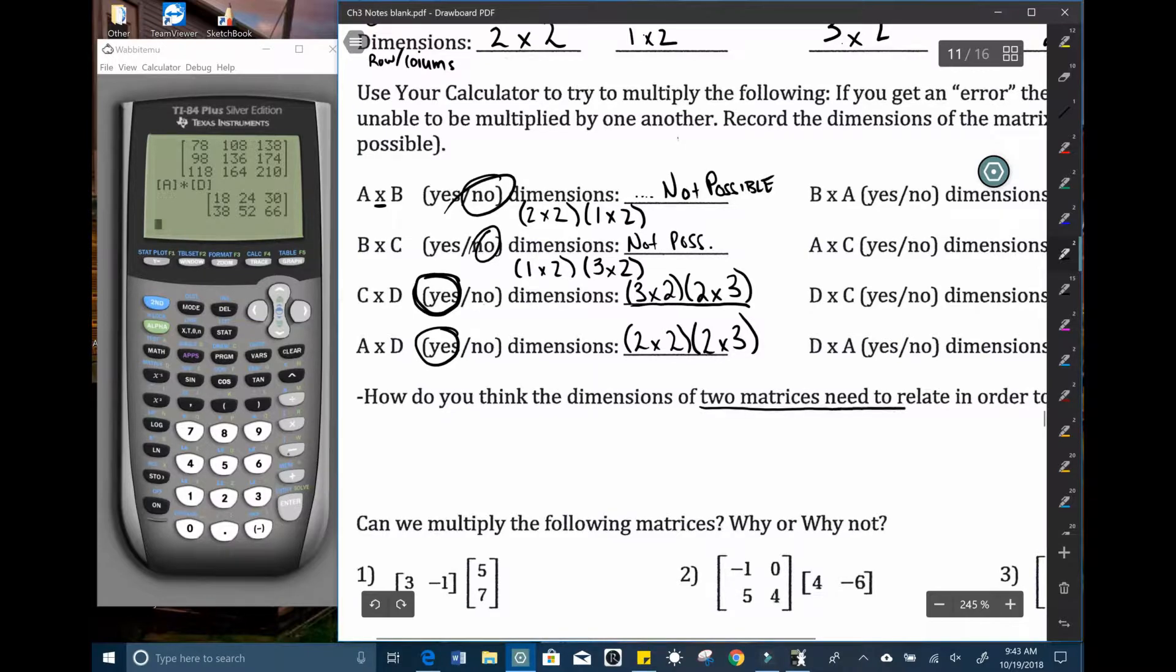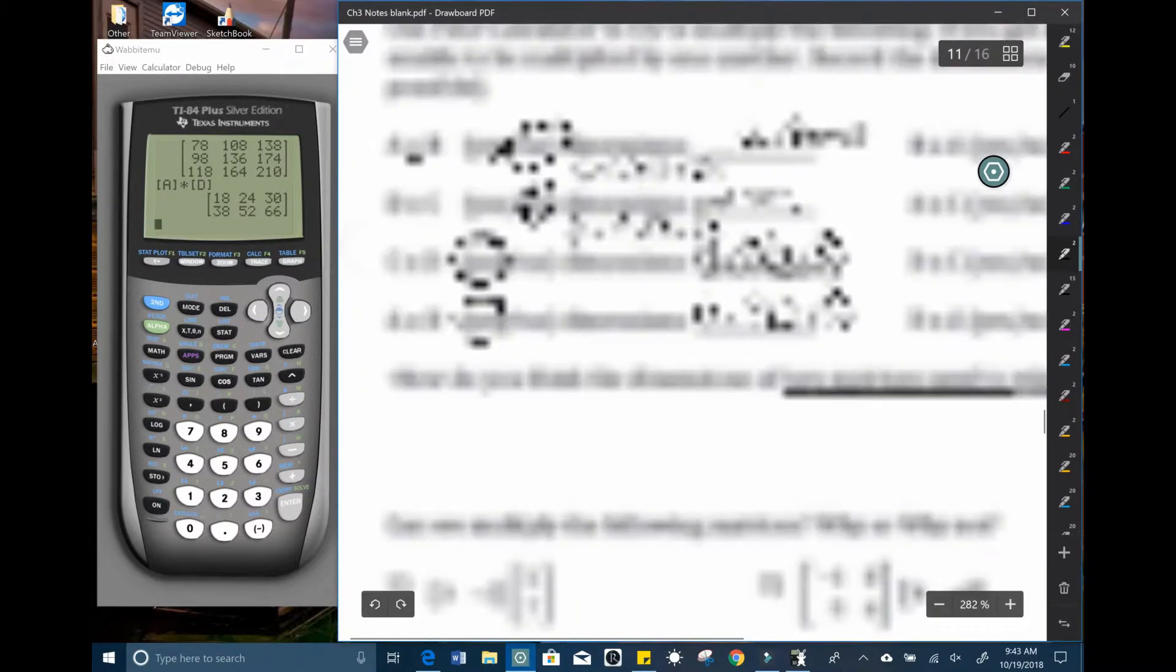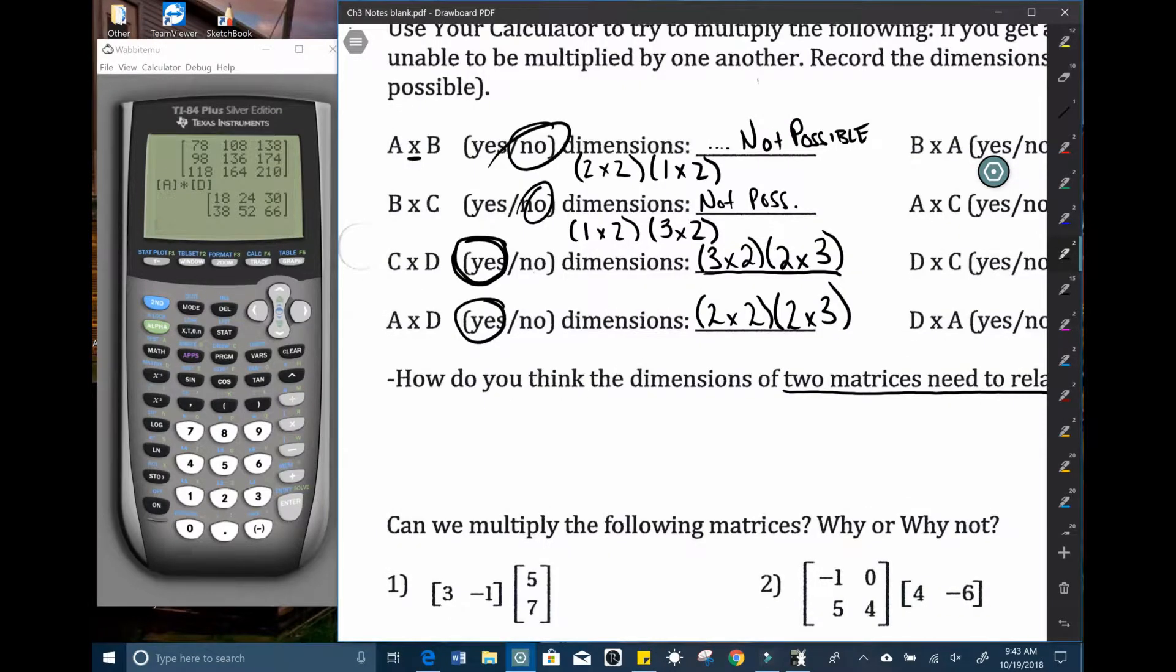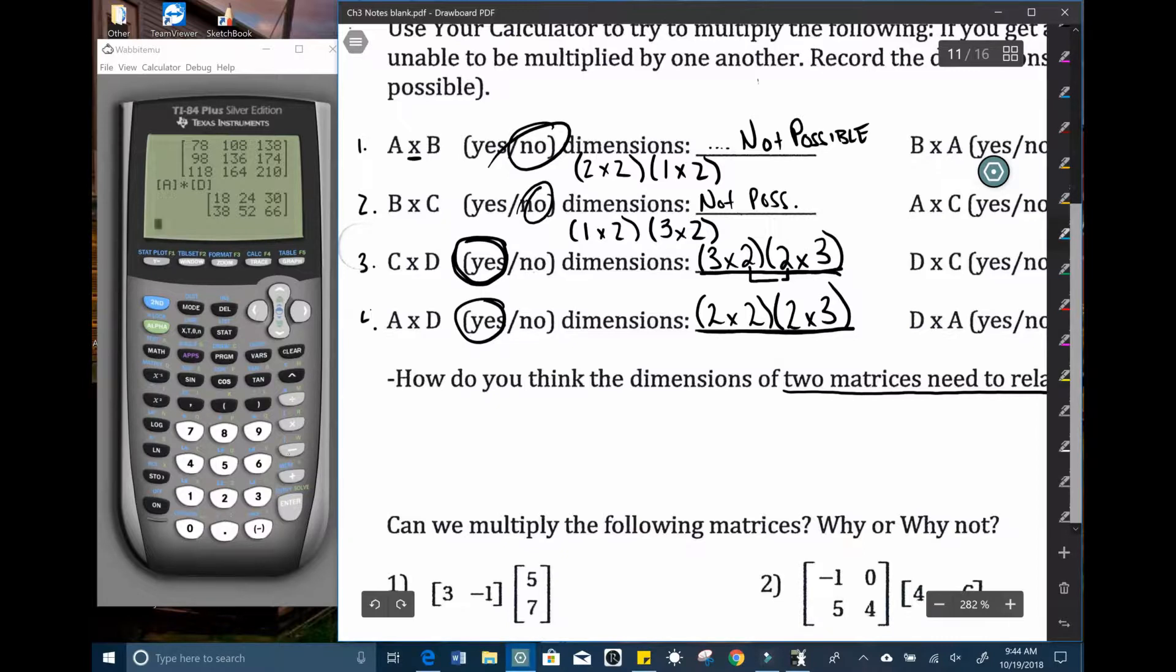So here is the trick. The dimensions of the two matrices, how do they need to relate? So for the first two, if we label them example one and two, the matrix multiplication didn't work. For three and four it did. The key thing to notice is if you write out the dimensions, if you write the dimensions out as to what you are trying to multiply, the inner two numbers, the number of columns must equal the number of rows in the second matrix. So these two numbers need to be equal in order for you to multiply. Notice how it didn't work for these ones here.